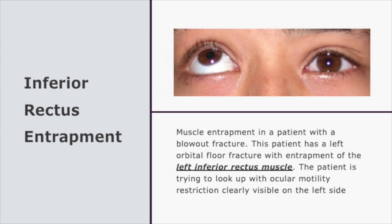Looking at this image, here is a patient with muscle entrapment following a blowout fracture — an eponym for orbital floor fracture — involving the left inferior rectus muscle. The patient is trying to look up but ocular motility restriction is clearly visible on the left side: the right eye can look up to the roof but the left one cannot, and the patient may complain of diplopia.